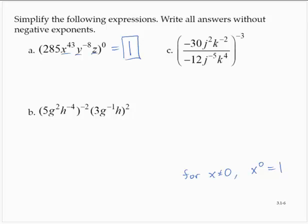5g to the 2nd h to the negative 4th to the negative 2nd times 3g to the negative 1st h to the 2nd. All right, so here's what I'm going to do with this. I'm going to raise everything to the appropriate powers.